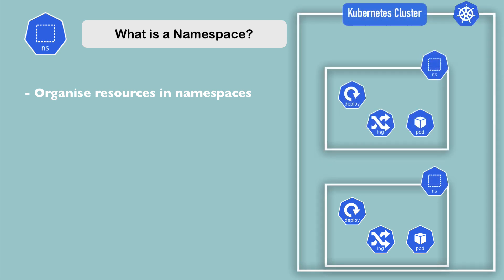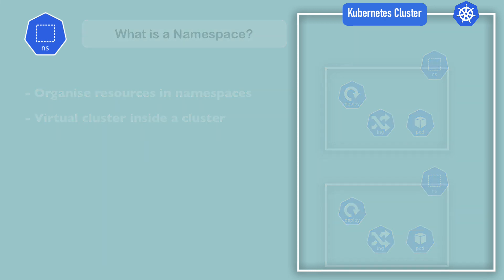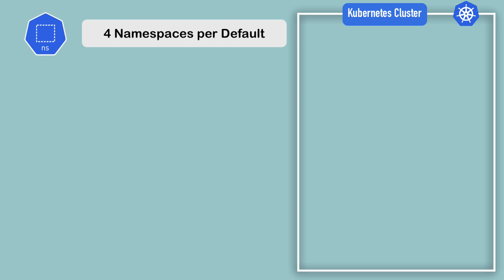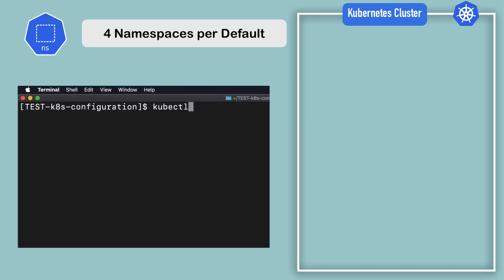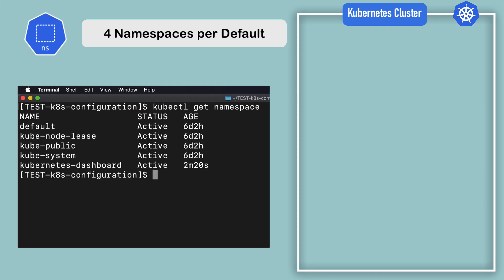You can think of a namespace as a virtual cluster inside of a Kubernetes cluster. When you create a cluster by default, Kubernetes gives you namespaces out of the box. So in the command line, if I type kubectl get namespaces, I see the list of those out-of-the-box namespaces that Kubernetes offers.